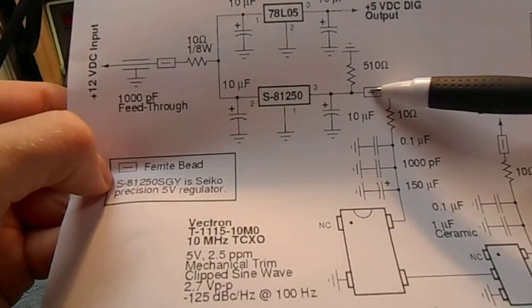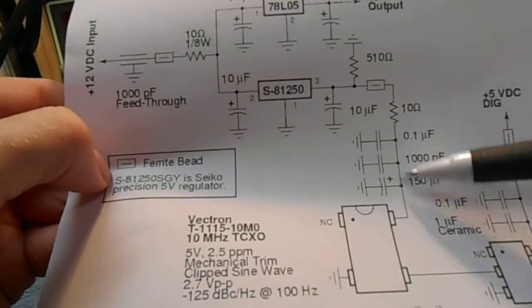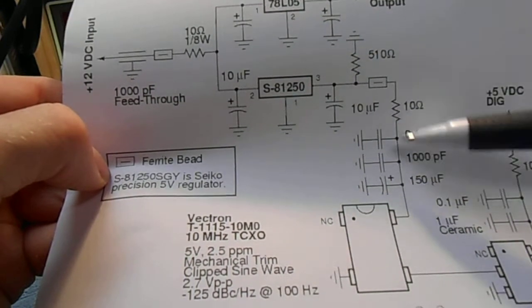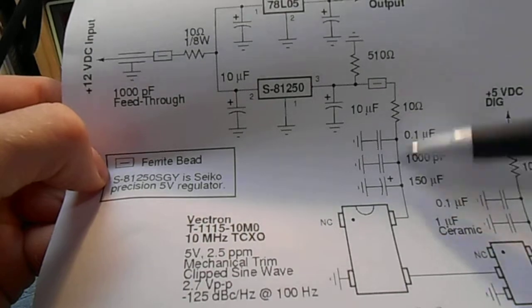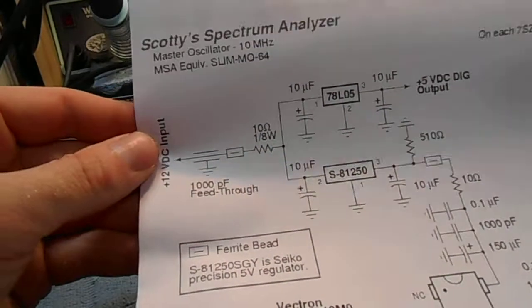The oscillator has its series ferrite bead and series 10 ohm resistor with the decoupling capacitors. It kind of serves as a low pass network just to remove any noise or ripple. It will be on the lines.